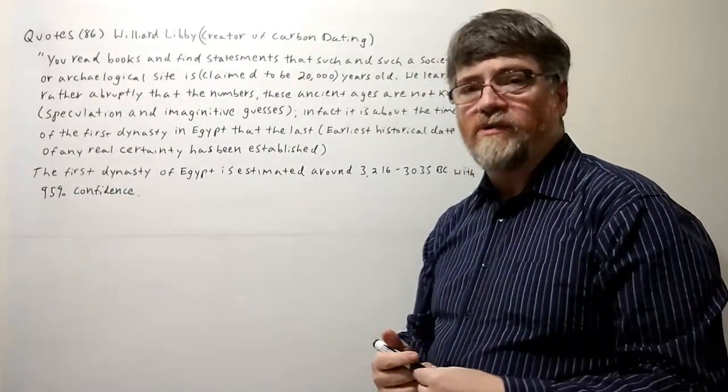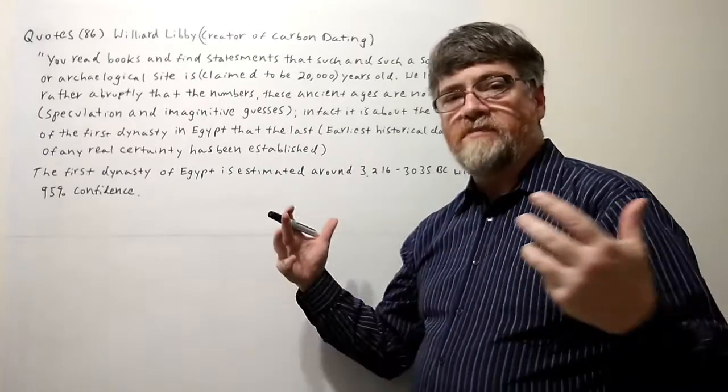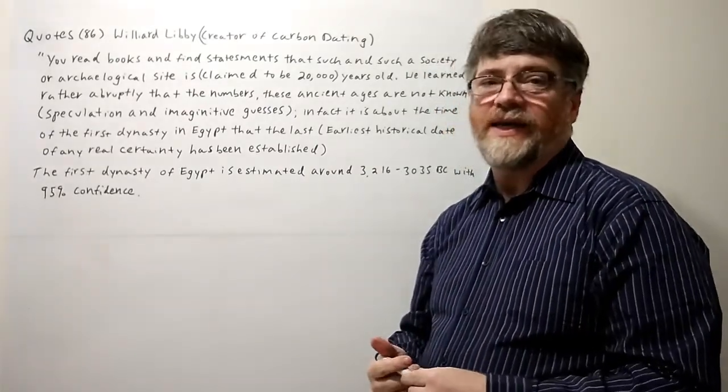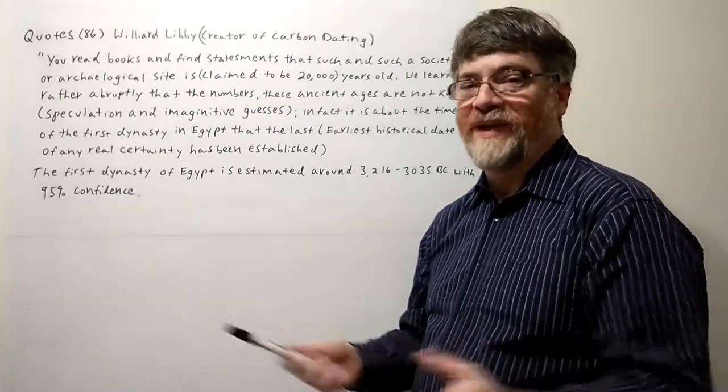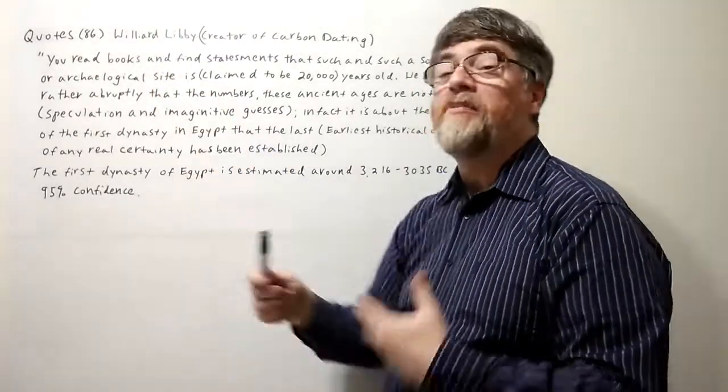So when you hear dinosaurs lived 15 million years ago or the earth is 300 million years old or something like that, they're guessing. That's according to the guy that created it, the guy that won a Nobel Prize for it.